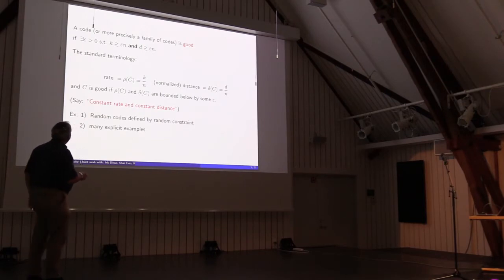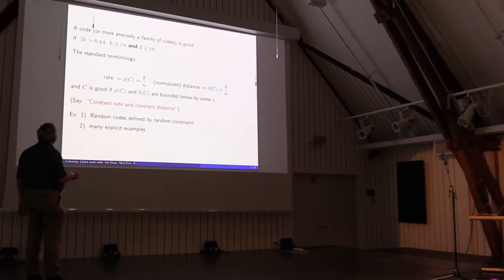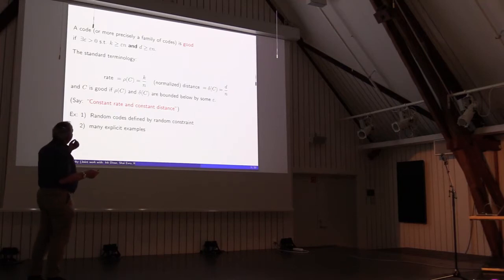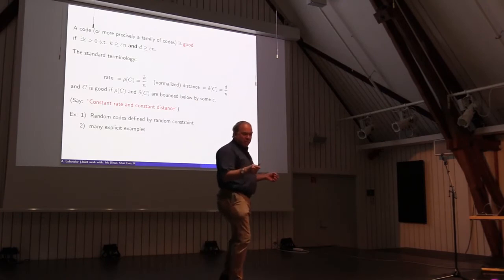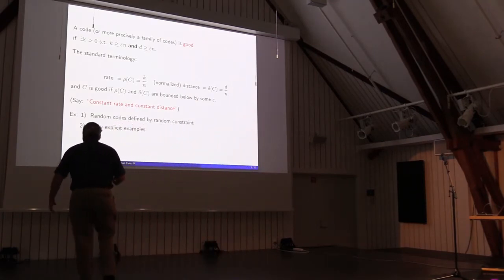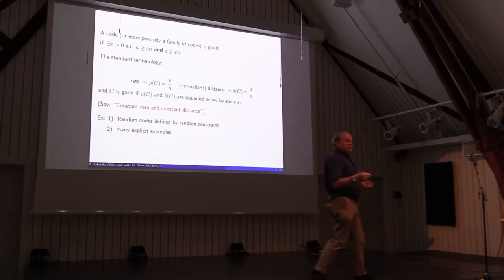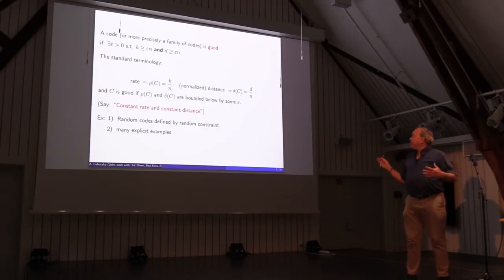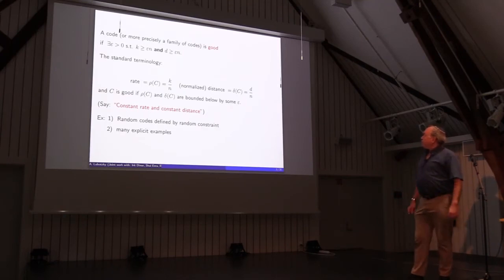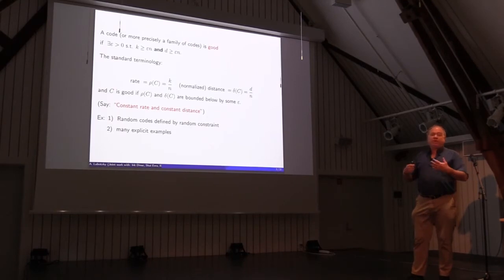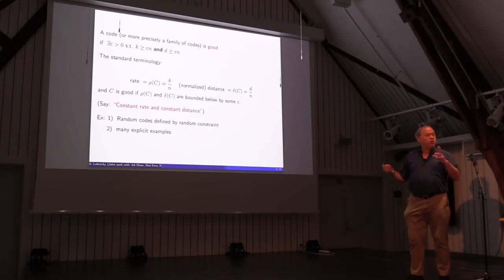The standard terminology is to normalize and talk about the rate of the code, which is K over N, and the normalized distance — sometimes called delta of C — which is D over N. What we really want is that the rate and the normalized distance are both bounded away from zero, which in standard terminology means constant rate and constant distance. It's not even clear that such codes exist, but going back to the very early stage of this theory, random codes defined by random constraints — namely a random matrix or random linear functionals — define a good code in this sense.